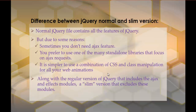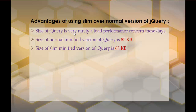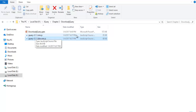The slim version contains a combination of CSS and class manipulation features. If you are using the slim minified version of jQuery, the size of the file will be 68 KB, and if you are using the normal minified version, it is 85 KB. You can observe the size of the normal jQuery minified file is 85 KB, but since Ajax and effect modules have been removed in the slim file, the size is reduced to 68 KB, and automatically the load performance will increase.